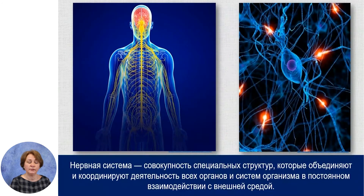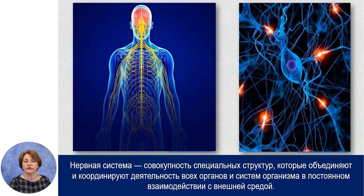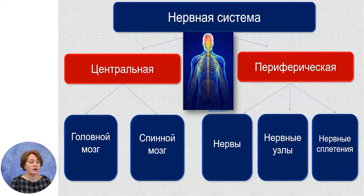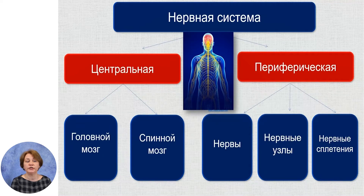Нервная система – это совокупность специальных структур, которые объединяют и координируют деятельность всех органов и систем органов организма и постоянно взаимодействуют с окружающей средой. Нервная система по строению делится на две части: центральная нервная система – это головной и спинной мозг; и периферическая нервная система – к ней относятся нервы, нервные узлы и нервные сплетения.